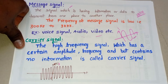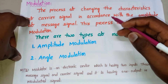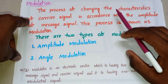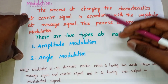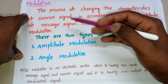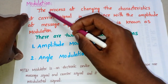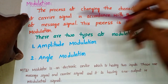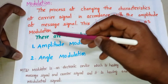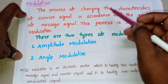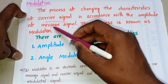In this video we will discuss modulation technique in analog communication. Modulation is one of the important techniques in analog communication for transmitting a wave over a longer distance. To transmit a message signal for a longer distance, we need to apply modulation. The definition of modulation: the process of changing the characteristics of a carrier signal in accordance with the amplitude of the message signal is known as modulation.